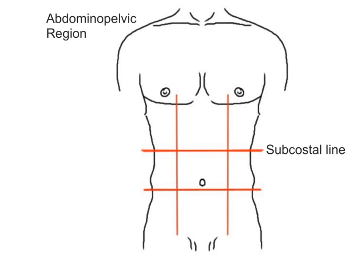The top horizontal line is the subcostal line, drawn just inferior to the ribcage. Subcostal means under the ribs. The bottom horizontal line is the trans-tubercular line and is drawn just inferior to the tops of the hip bones. The two vertical lines, called mid-clavicular lines, are drawn through the midpoints of the clavicles, also called the collarbones.